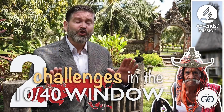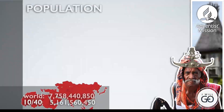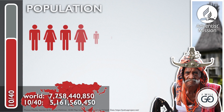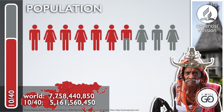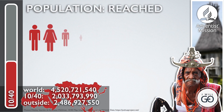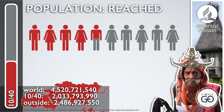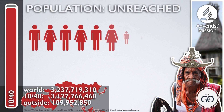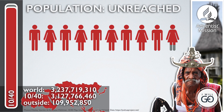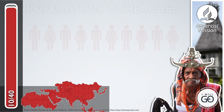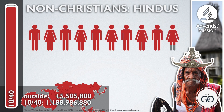Second, mission to the 1040 Window faces huge challenges. If the whole world's population was represented by 10 people, then a little more than six and a half of those people would live in the 1040 Window. If we represent all the people in the world who are reached by or who have access to the gospel, around four and a half would live in the 1040 Window. But for the unreached, that number jumps up to over nine and a half of our world's unreached.